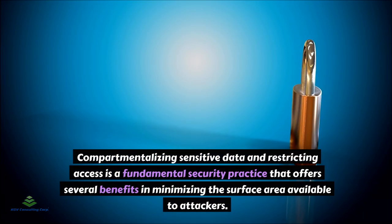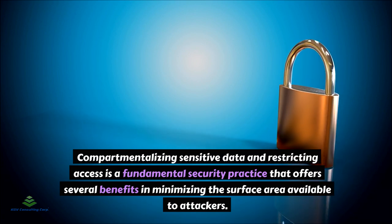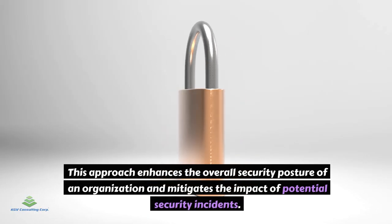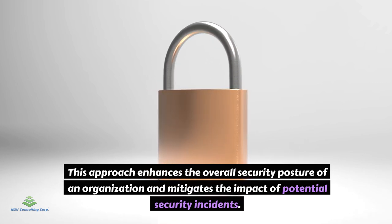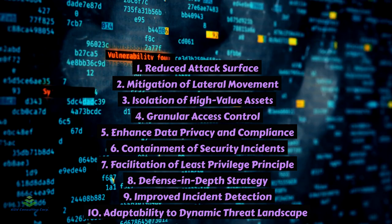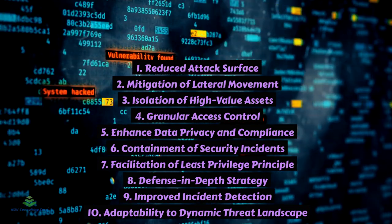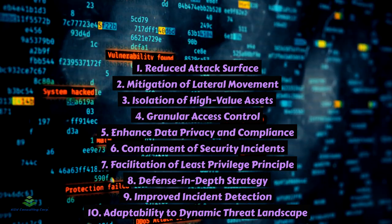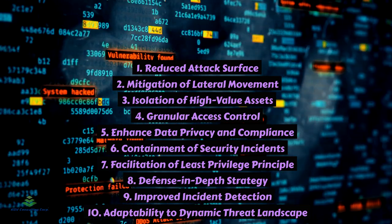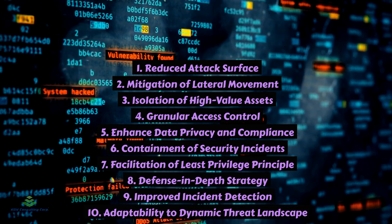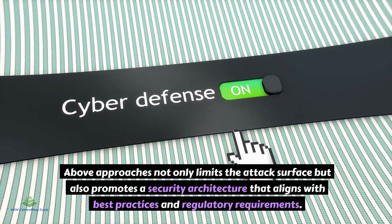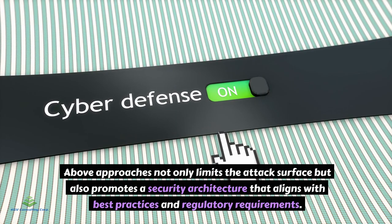Compartmentalization and access restriction enhance the overall security posture of an organization and mitigate the impact of potential security incidents. Key benefits include reduced attack surface, mitigation of lateral movement, isolation of high-value assets, granular access control, enhanced data privacy and compliance, containment of security incidents, facilitation of the least privilege principle, a defense-in-depth strategy, improved incident detection, and adaptability to a dynamic threat landscape. This approach not only limits the attack surface but also promotes a security architecture that aligns with best practices and regulatory requirements.